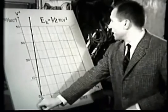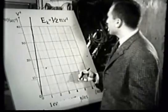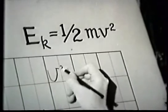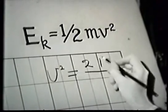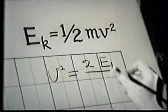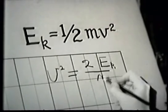As you can see, for the speeds that we're accustomed to, the velocity squared is proportional to the ratio of the kinetic energy to mass.